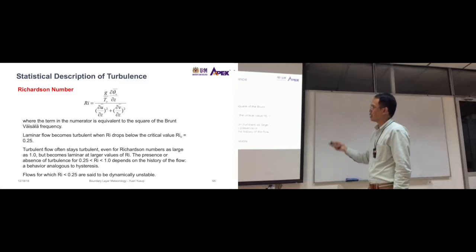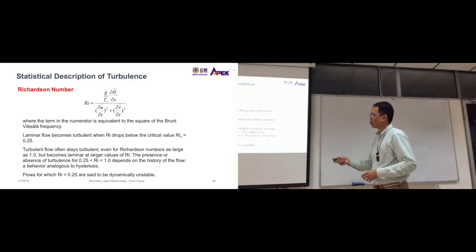I think it's just the nature of the atmosphere, but becomes laminar only at very, very large values of ri. So maybe a lot higher than 1. Now the presence or absence of turbulence between 0.25 and 1 depends on the history of the flow behavior analogous to hysteresis. It means it's a lack of values.